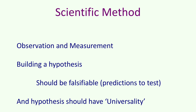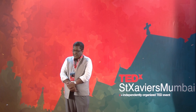So what is the scientific method? It is based on observation and measurement, on building a hypothesis — a hypothesis that should be falsifiable, which means it should be able to make predictions which I can test and see whether the hypothesis is correct. And at the end of it, the hypothesis should also have an attribute called the universality attribute.